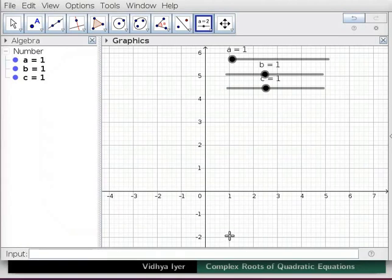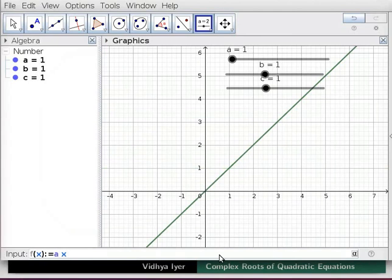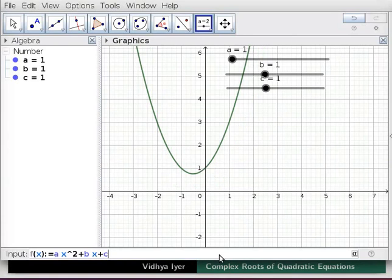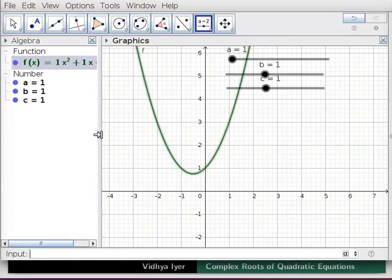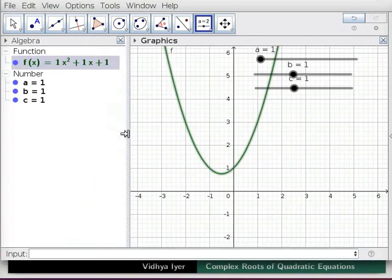In input bar, type the following line: f(x) := a x^2 + b x + c. Press enter. Drag boundary to see algebra view properly. Pay attention to the spaces indicating multiplication.